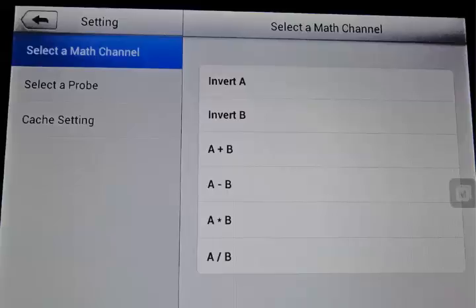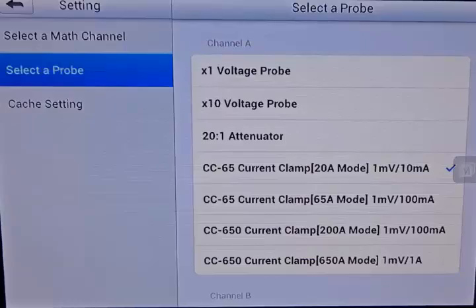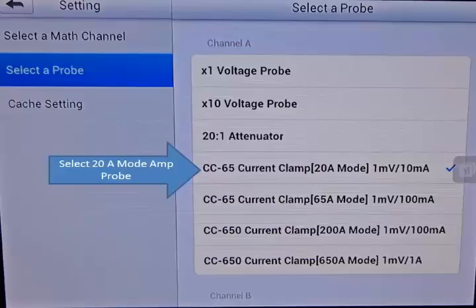Now we've got math channels, that's for advanced testing. We've got select a probe. We're looking for an amp probe. That's a good place to start right there. So we're going to select a probe. When we select that, we see a number of choices, voltage probes, a lot of current probes. We're going to use a low amps probe. We're going to select the 20 amp mode from the amps probe.